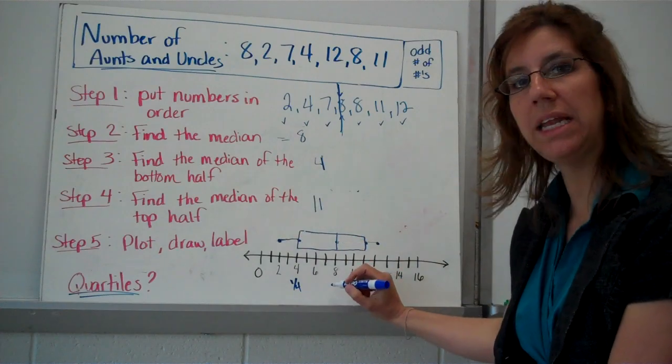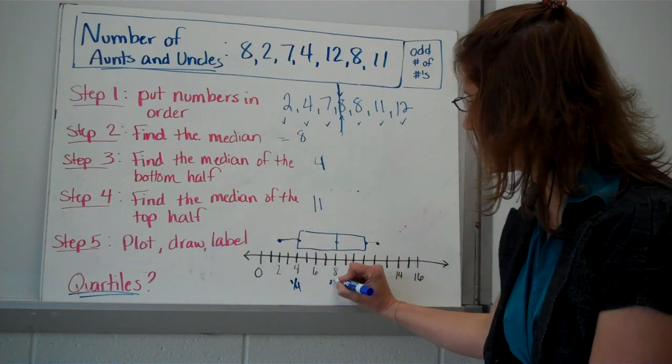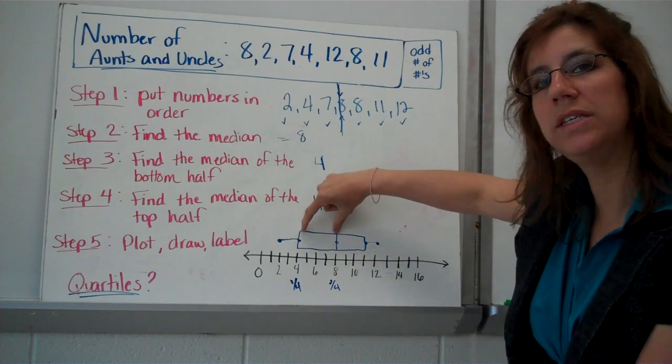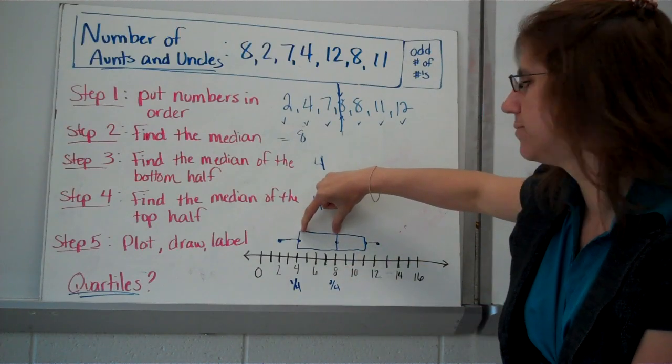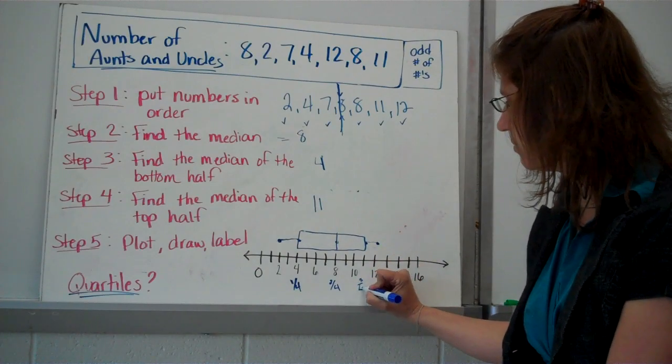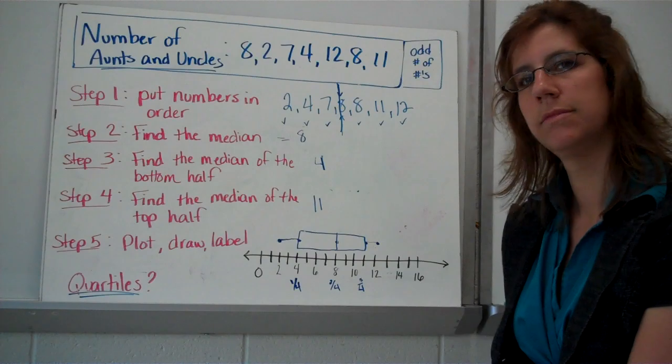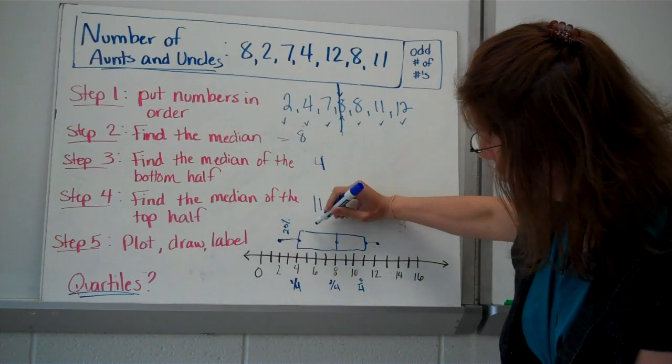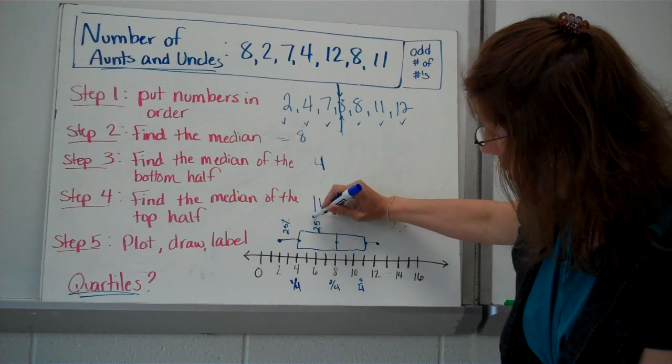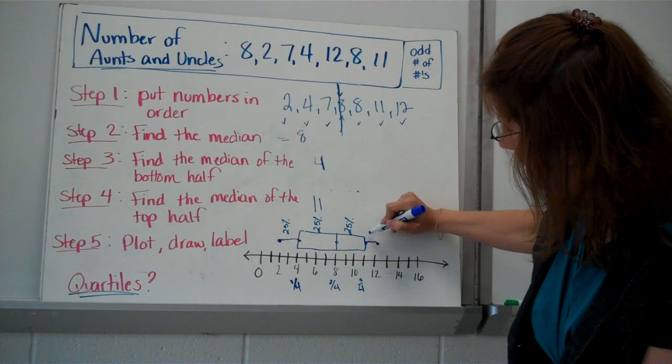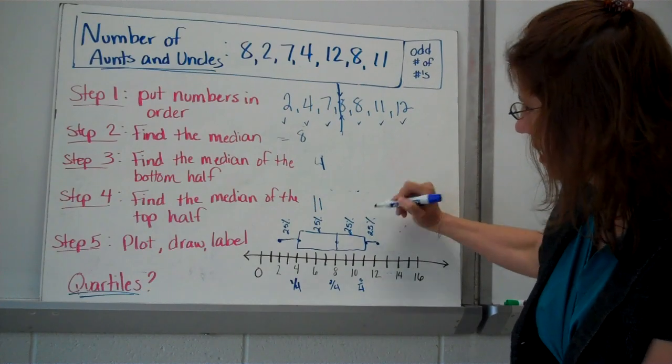This middle, median number, is our second quartile. This would be another 25% of our data. This, of course, makes the 11 the third quartile. 25%, 25%, 25%, 25%, and you guessed it at the end, another 25%.